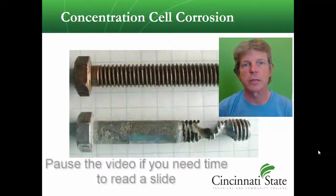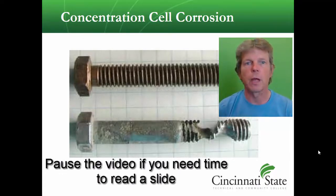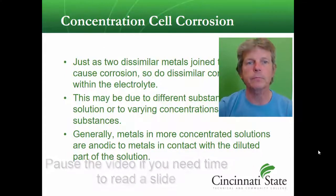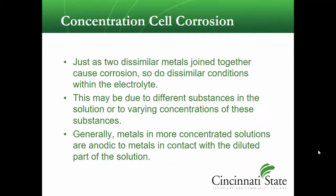Concentration cell corrosion is another type of way that corrosion is formed. Just as two dissimilar metals joined together cause corrosion, dissimilar electrolytes can also cause corrosion.